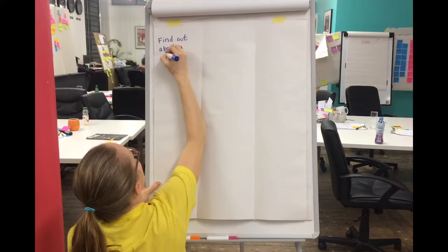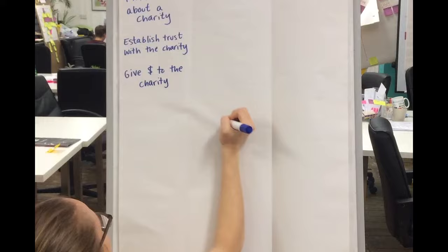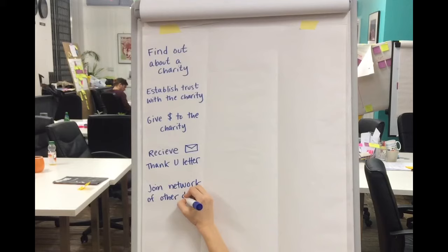Step two: break down the topic into a series of super simple interactions. Think about what it's like to go through that experience from beginning to end. The first step is probably to find out about the charity, then establish trust with them before you give over your money, then receive a thank you letter, and then the last step perhaps would be joining a network with other donors to the same charity.